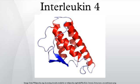IL-4 has also been shown to drive mutagenesis, de-differentiation, and metastasis in rhabdomyosarcoma. IL-4, along with other Th2 cytokines, is involved in the airway inflammation observed in the lungs of patients with allergic asthma. See also: STAT6.